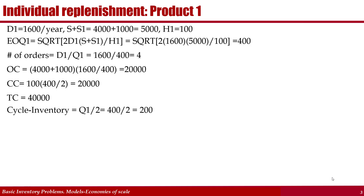Cycle inventory is half of what we order: $400,000 divided by 2 equals $200,000. Because we have no safety stock, average inventory and cycle inventory are the same. Inventory turns: cycle inventory is $200,000, safety stock is $0, so average inventory is $200,000. Demand divided by average inventory gives inventory turns.